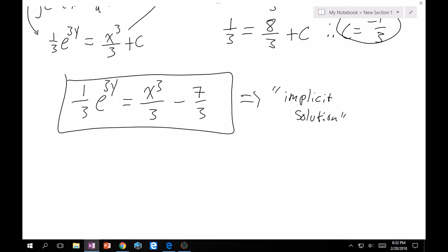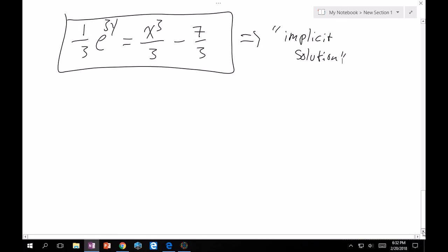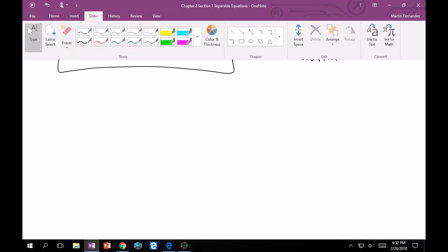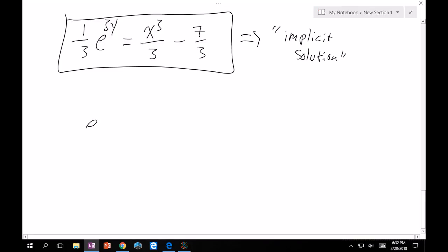If I want to solve for this explicitly, that's not too hard to do here. All you have to do is multiply both sides by 3. This will give you e to the 3y is equal to x cubed minus 7. If I take the natural log of both sides, I'll get 3y is equal to natural log of x cubed minus 7.